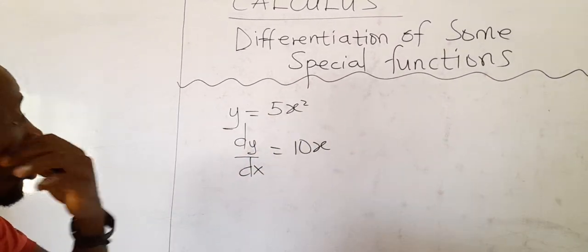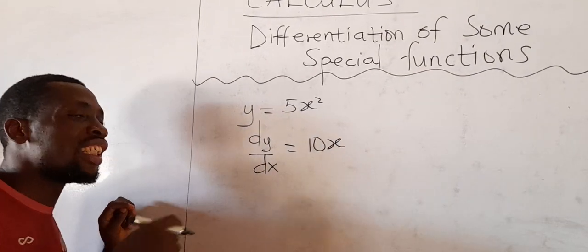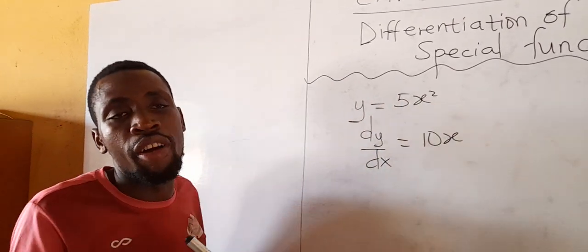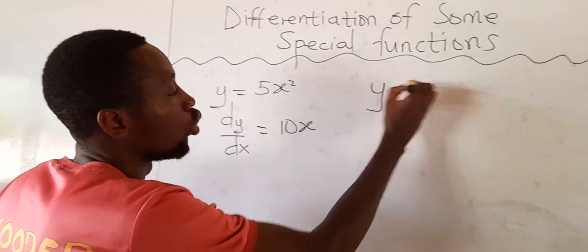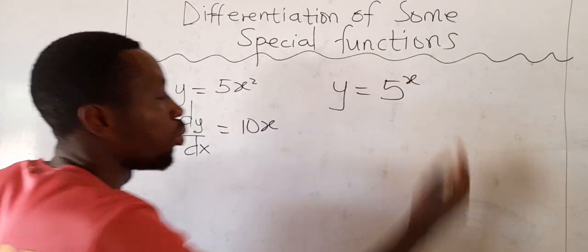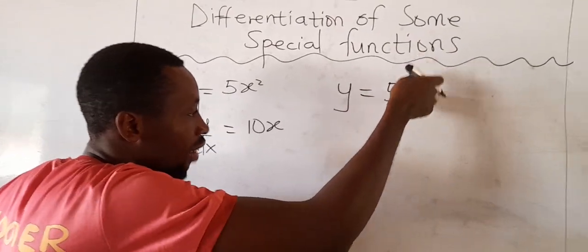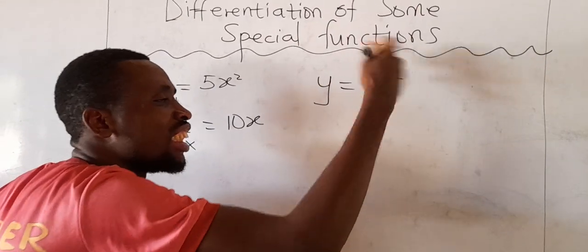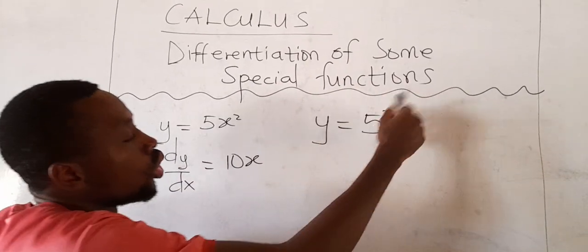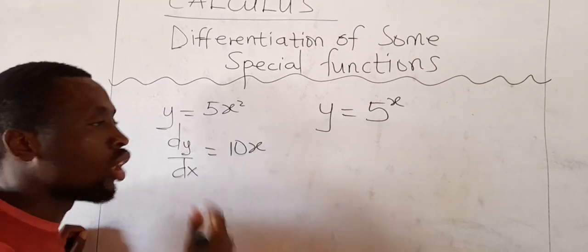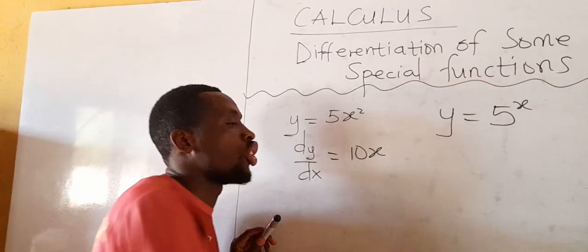Why do we call them special functions? It becomes special if a constant is being exponentiated by a variable this time around. For instance, maybe y equal to 5 exponent x — that is, a constant is being exponentiated by a variable. How do we differentiate such things? That is what we call some special functions. Before this video ends today, I will take you through how to differentiate such special functions.